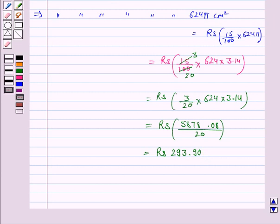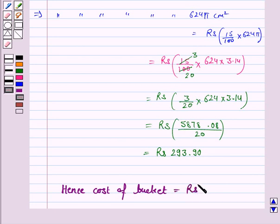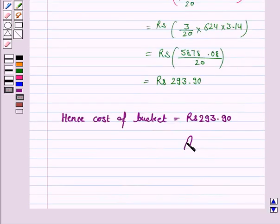So this is the cost of the metal sheet required to make that bucket. Hence, the cost of the bucket is equal to Rs. 293.90. This completes the question and the session. Bye for now, take care, have a good day.